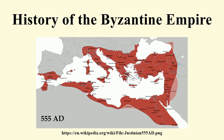During the Macedonian dynasty, the Empire again expanded and experienced a two-century-long renaissance, which came to an end with the loss of much of Asia Minor to the Seljuk Turks after the Battle of Manzikert in 1071. This battle opened the way for the Turks to settle in Anatolia as a homeland.